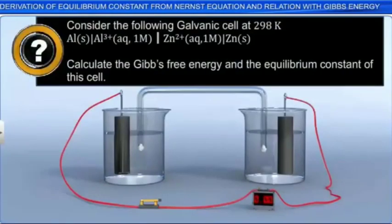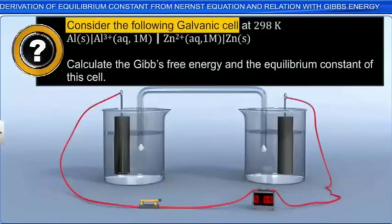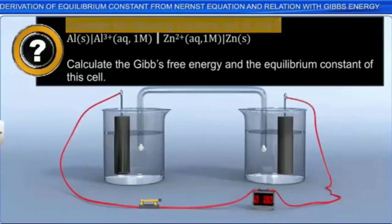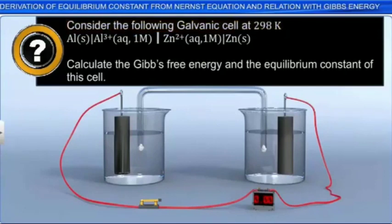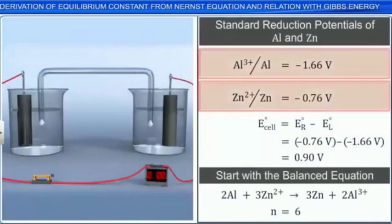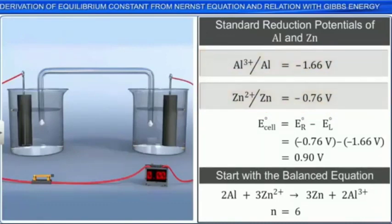Let's consider a galvanic cell at 298 Kelvin. This cell is made from half cells containing aluminium and zinc, where the ion concentrations are 1 molar. From the table of standard reduction potentials, you can easily find that the standard cell potential at these conditions is plus 0.90 volt.